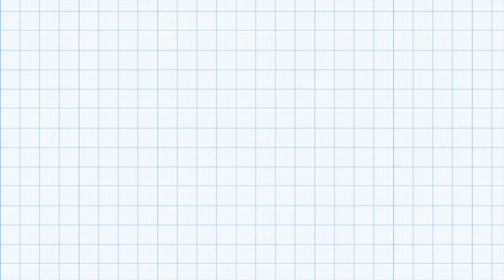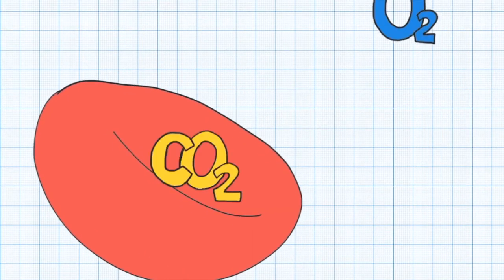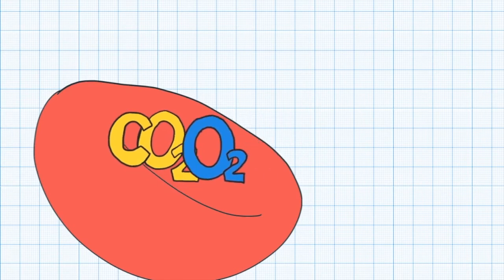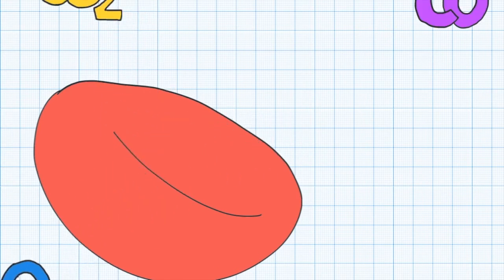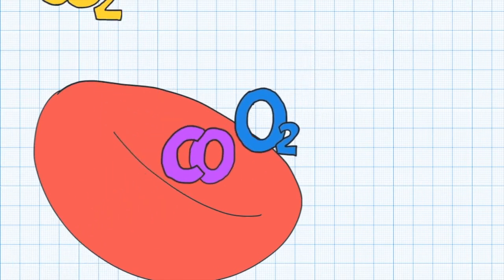Carbon monoxide specifically reduces the amount of oxygen delivered to our body because it binds very tightly to hemoglobin in our red blood cells and prevents them from being able to carry oxygen.